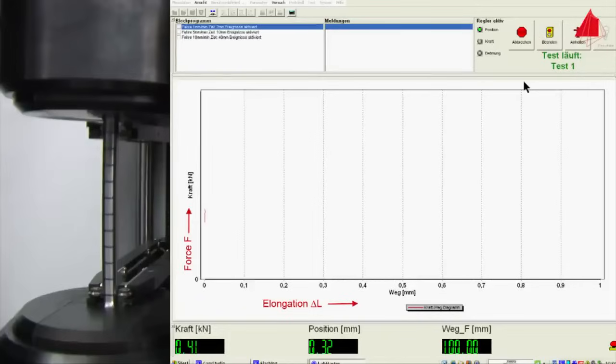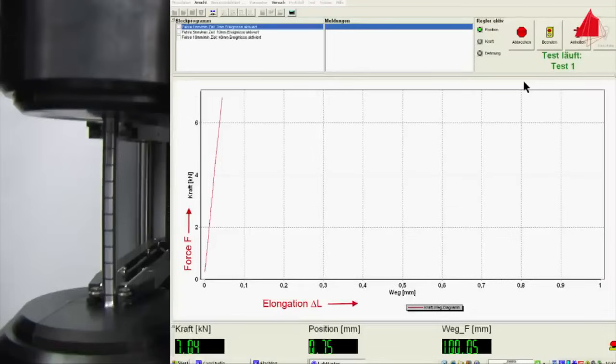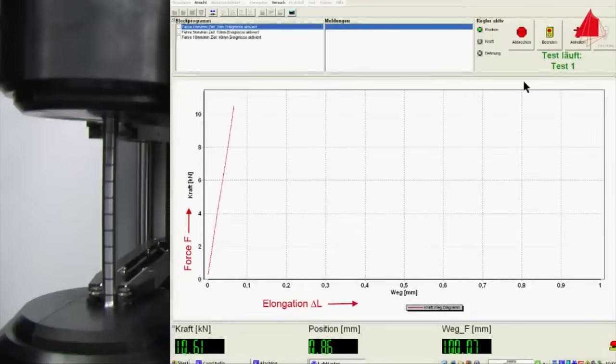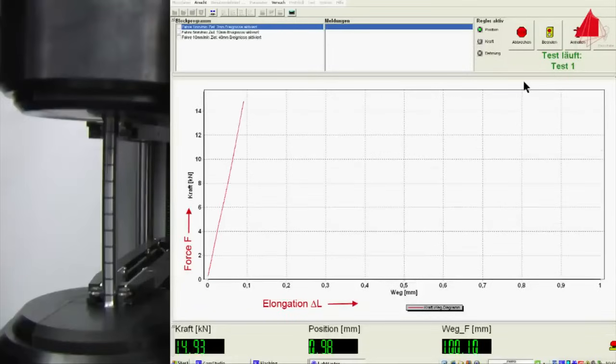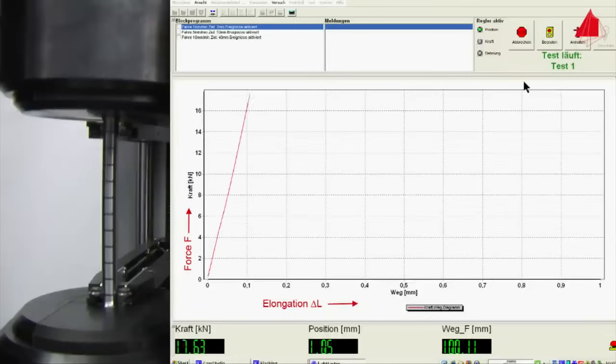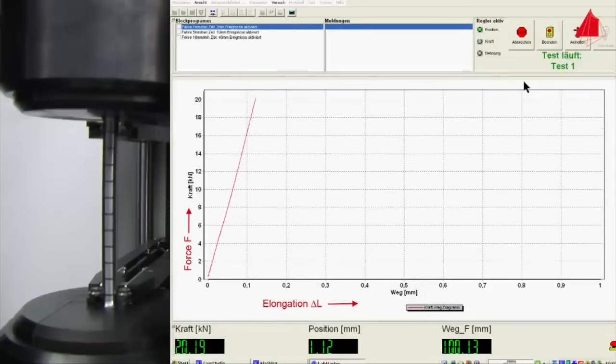The material behavior can best be observed in a force-elongation diagram. The force F is being plotted upwards on the vertical axis, the elongation ΔL towards the right on the horizontal axis. At first, the force rises rapidly. Force and elongation are proportional and form a steep straight line in the diagram. In this area, the material behaves elastically. If the test piece were to be unloaded from this area, it would spring back completely to its original length.